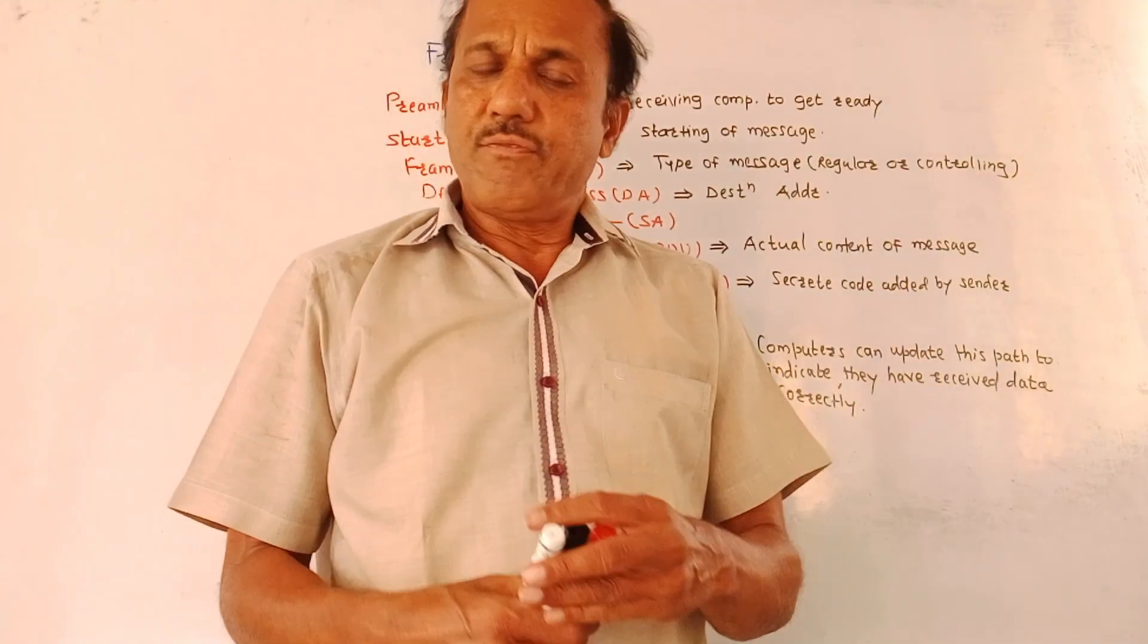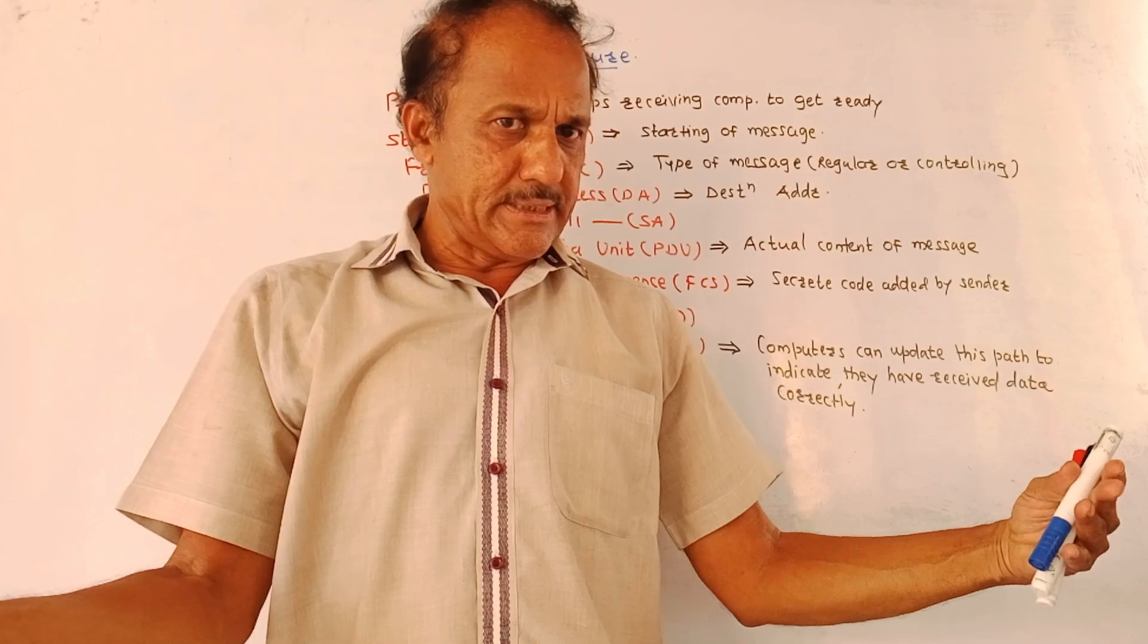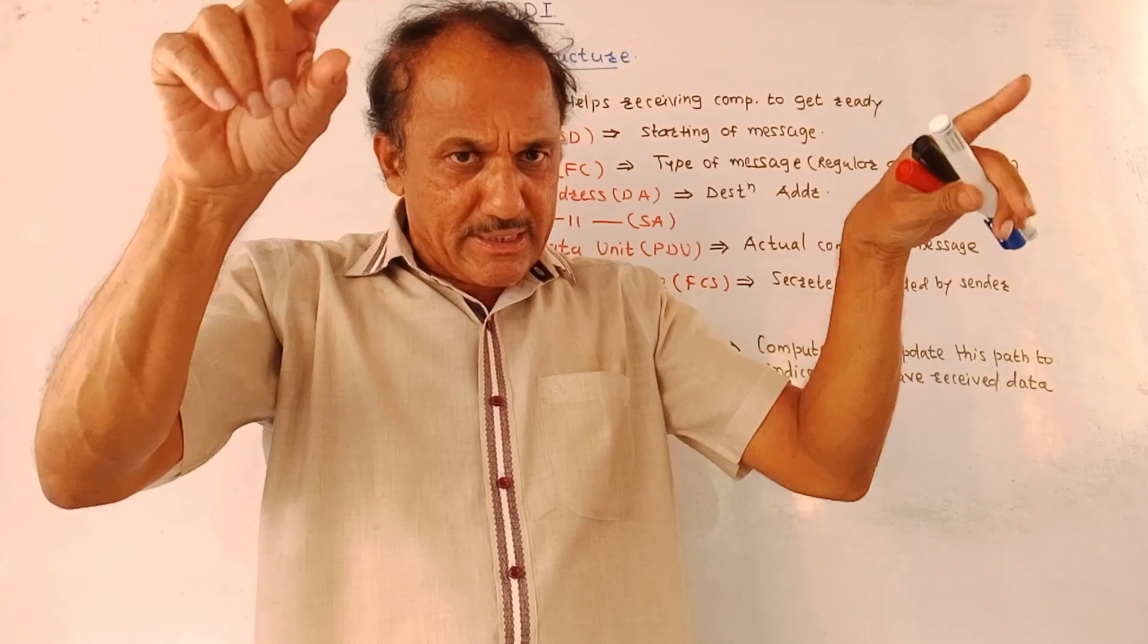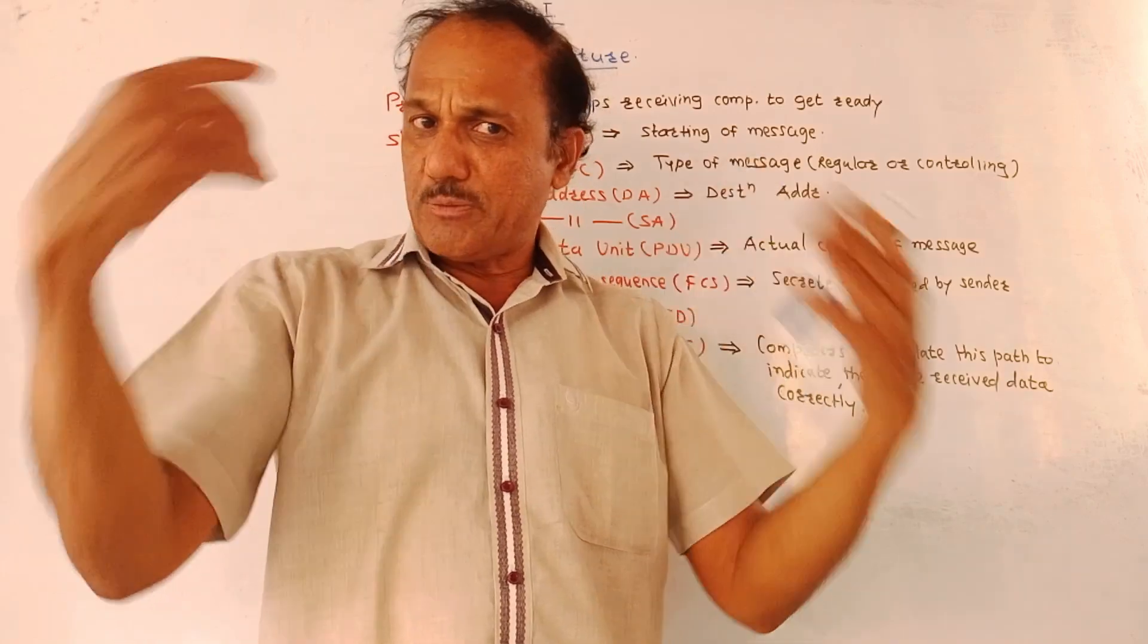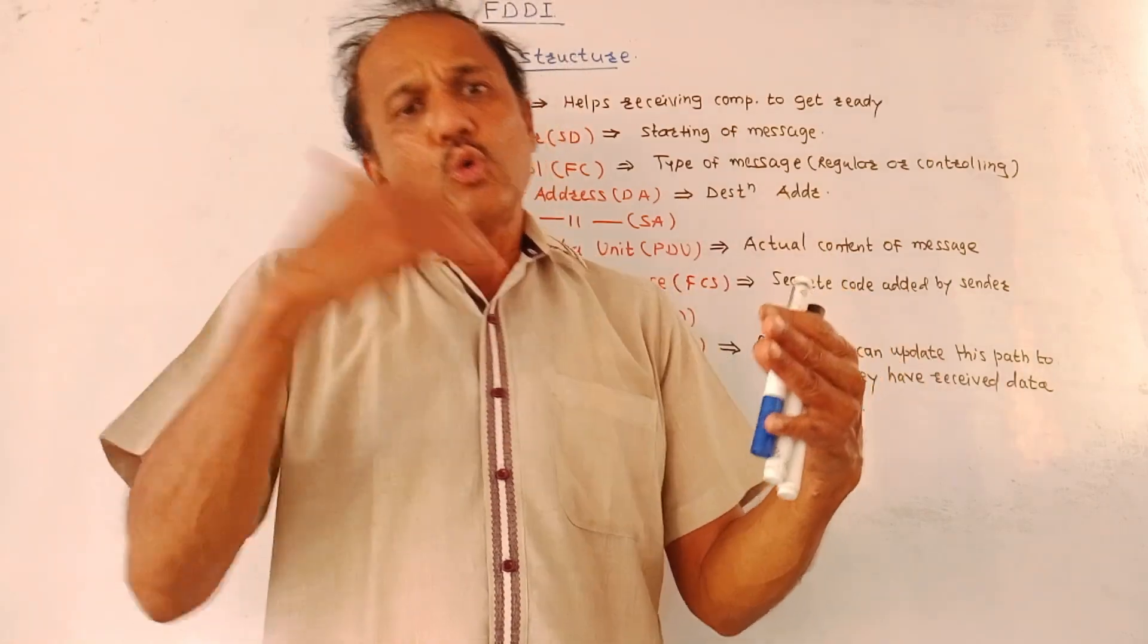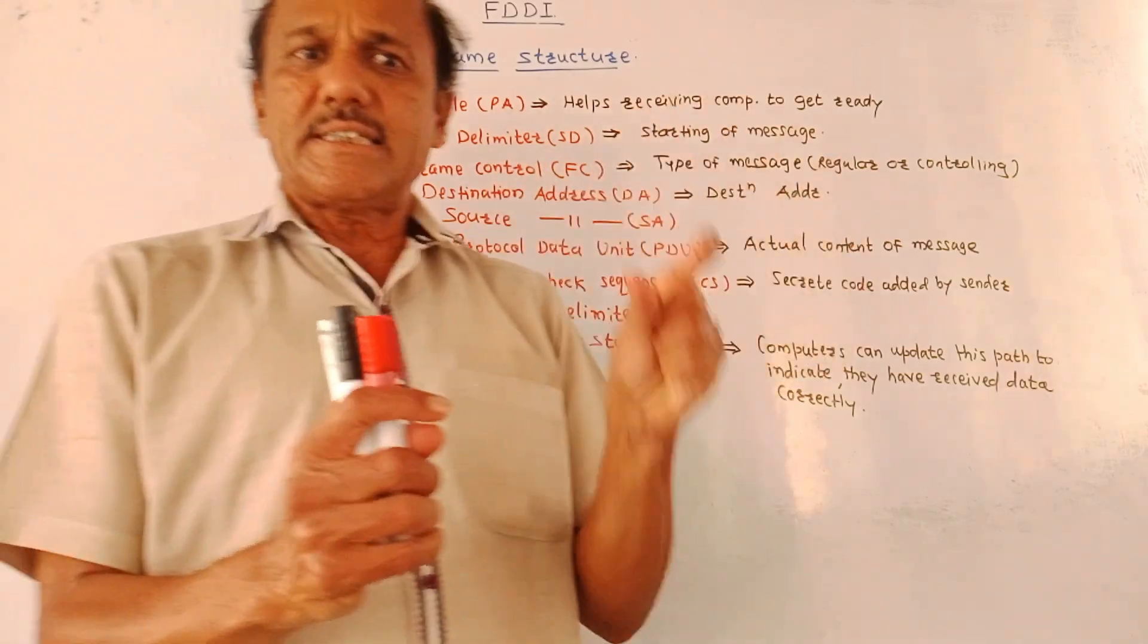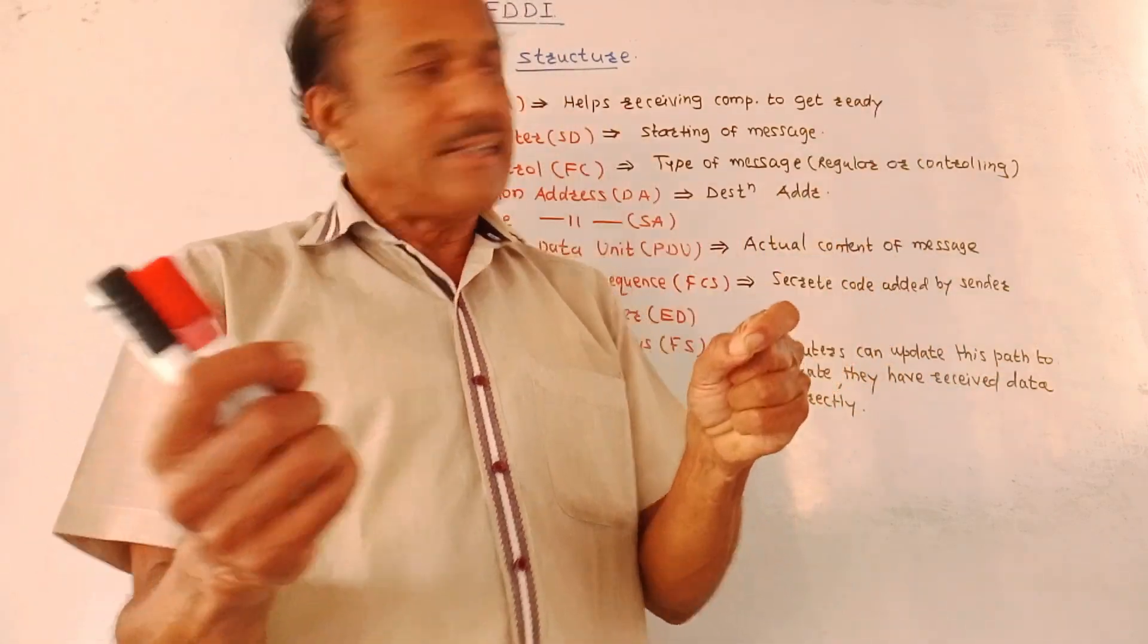The next part is frame structure of FDDI. Think like this. There are n number of computers in, let's say, a college or in a building and they want to make communication. They want to talk to each other. Let's say that all such computers are arranged in the form of a circle and any computer wants to send the data, wants to transfer the data to some another computer. Then the frame decides how to do this communication. Actually, to ensure that only one computer is sending the data at a time, a token system is used. Whoever computer gets the token is eligible to send the data.